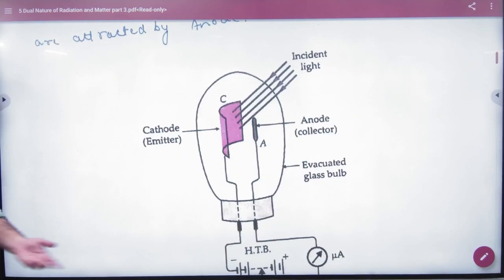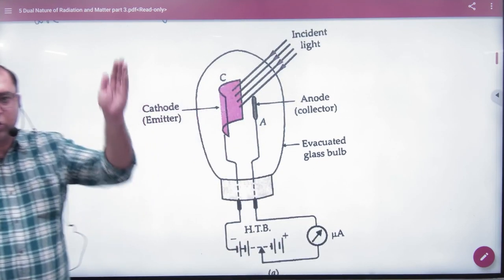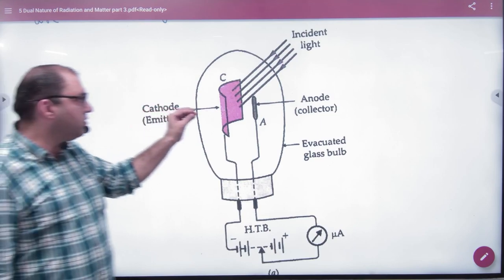The concept is that you take a photosensitive metal. Photons fall on it. Photons cause photoelectric emission.